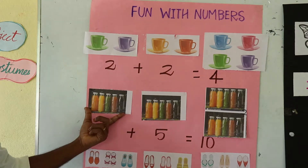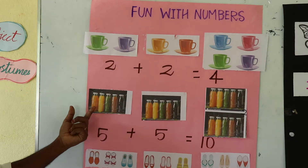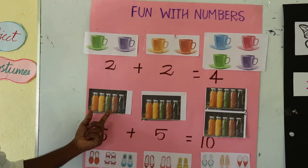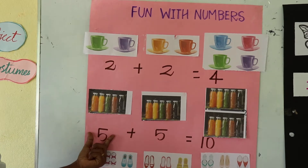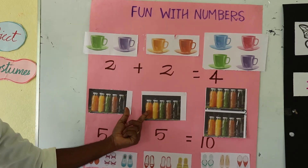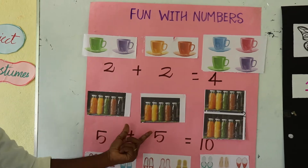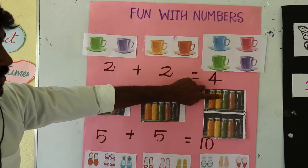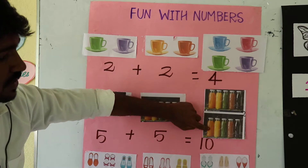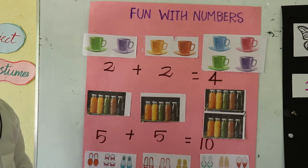Then next one, how many water bottles are there? 1, 2, 3, 4, 5. So 5. Next one also, 1, 2, 3, 4, 5. So 5 plus 5 is equal to 1, 2, 3, 4, 5, 6, 7, 8, 9, 10. So 10 water bottles.